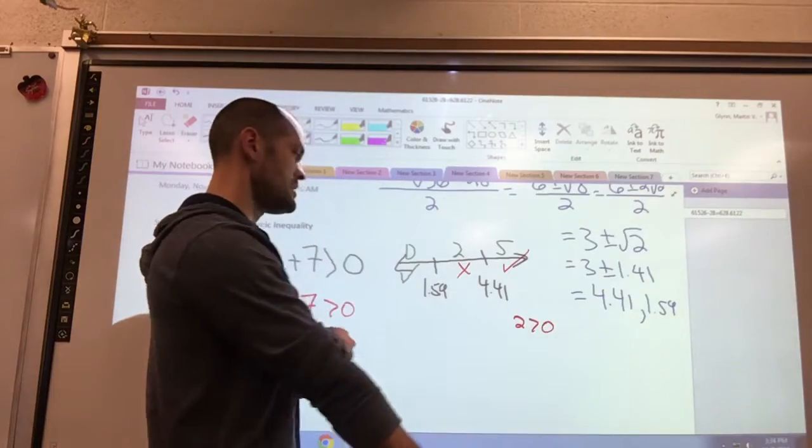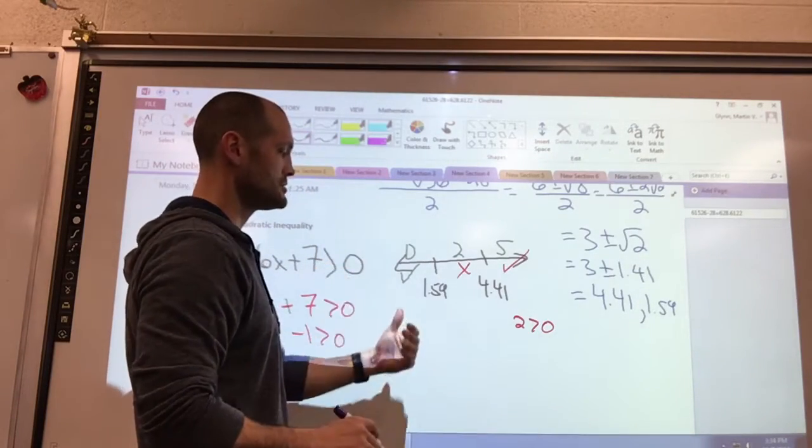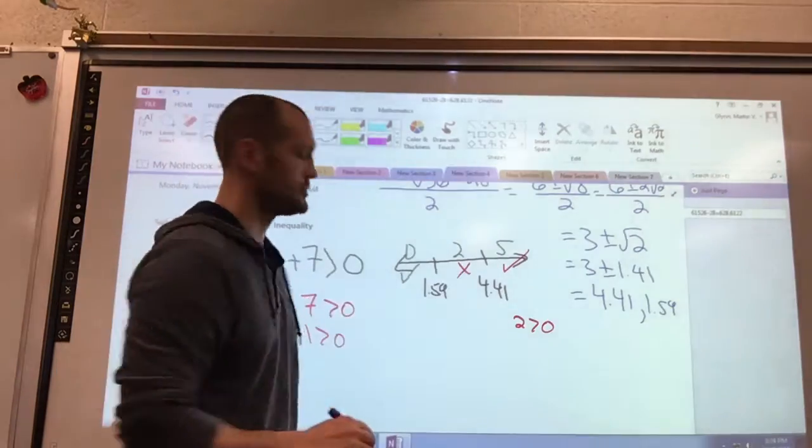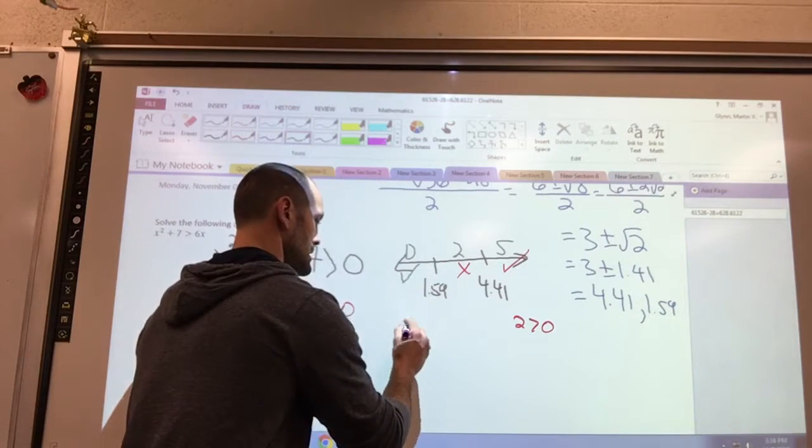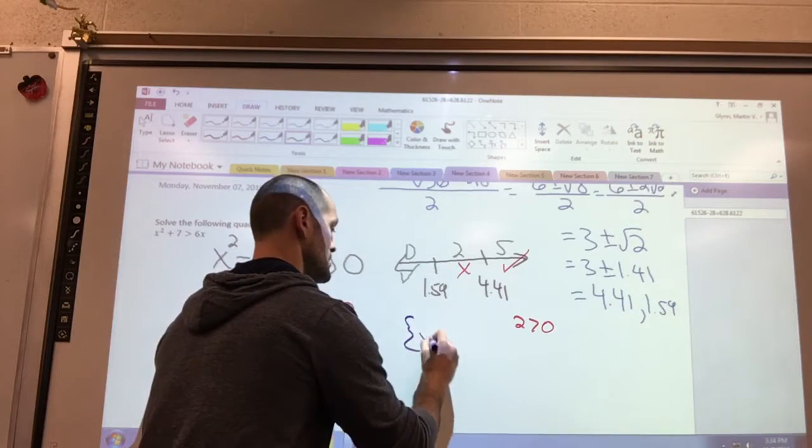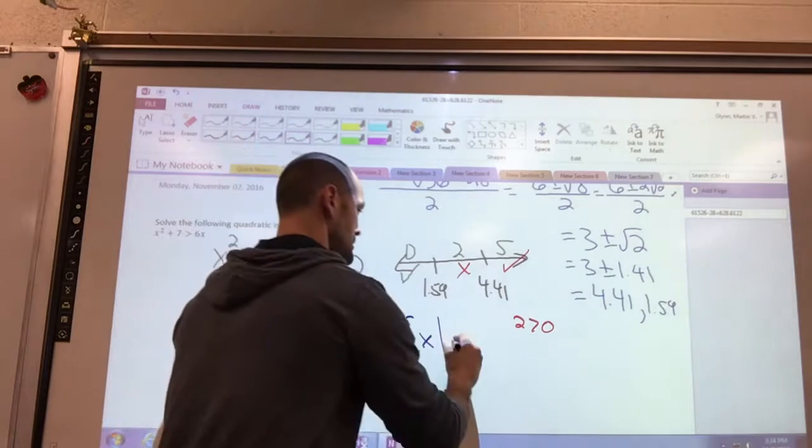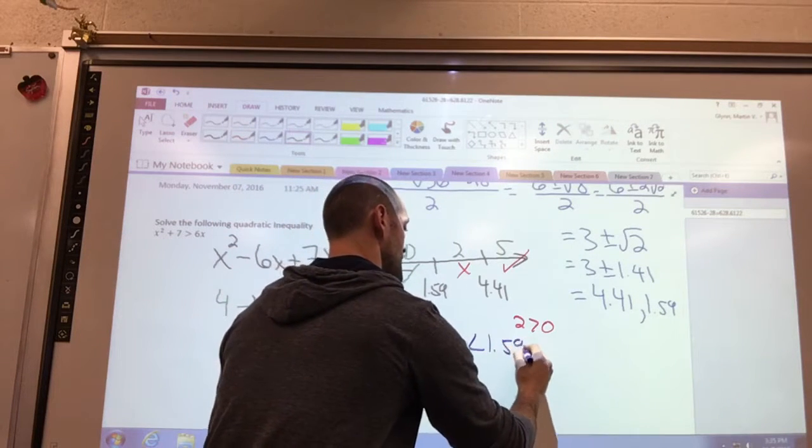So what do I do? I write it. I'm going to show the notation way that we could use function notation, and then we'll also show with interval notation. Here my answer set lies with x such that x is less than 1.59 or x is greater than 4.41.